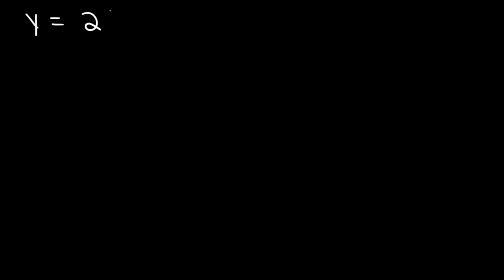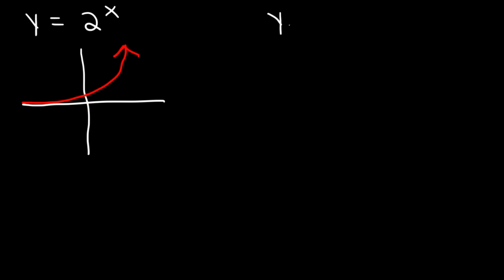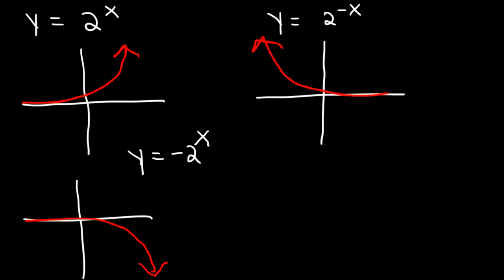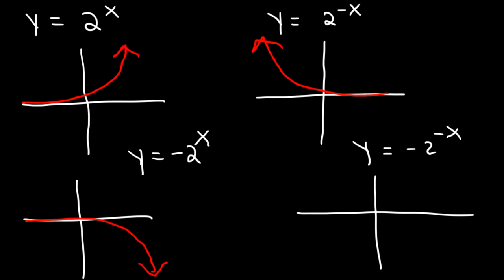Now let's review four generic shapes of exponential functions. The first is 2^x — this function increases towards quadrant one. The next is 2^(-x) — this graph reflects over the y-axis, so it increases towards quadrant two. Next, negative 2^x reflects over the x-axis and travels towards quadrant four. Finally, negative 2^(-x) reflects across the origin relative to the first one and travels towards quadrant three.